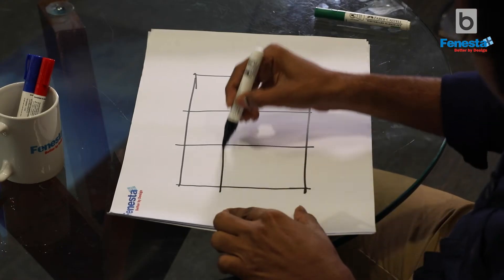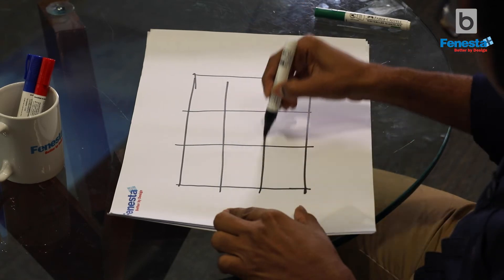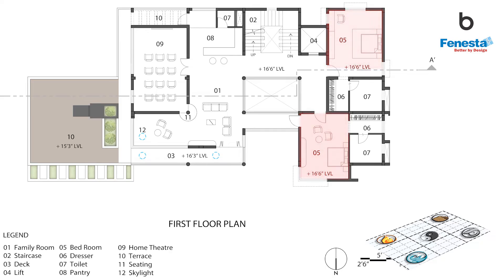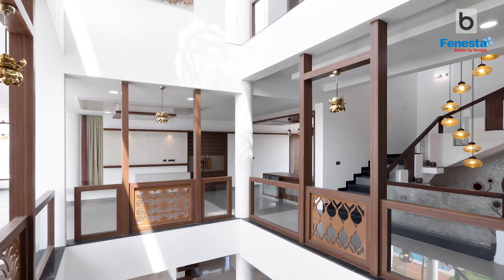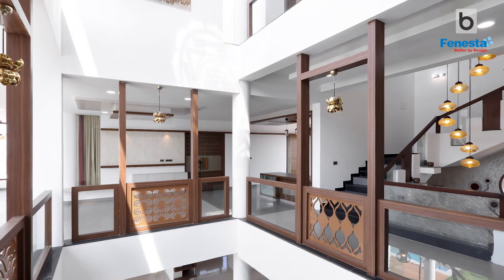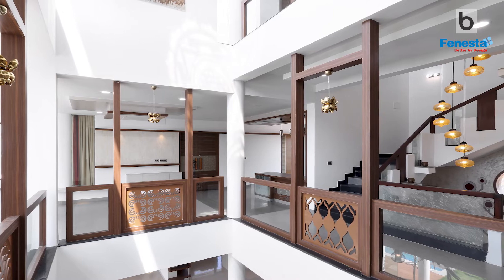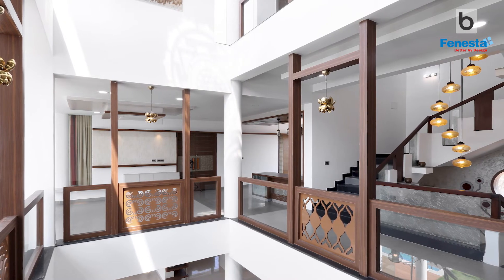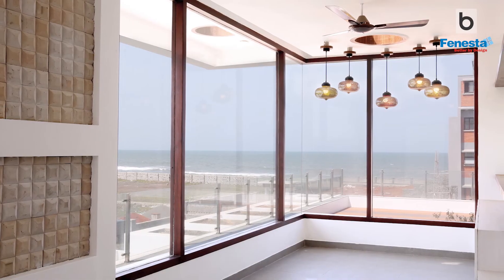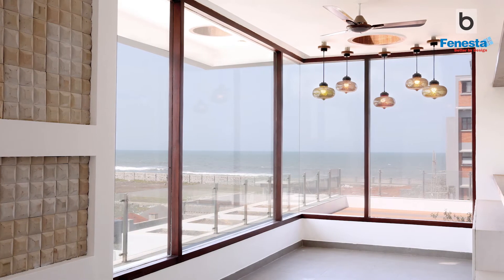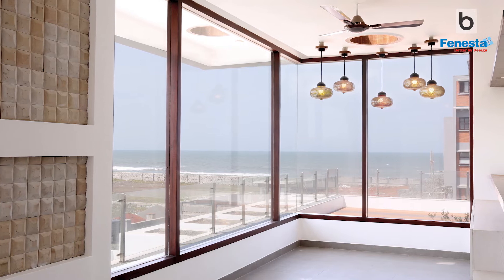On the first floor, another two bedrooms were placed the same as the ground floor. There is a home theatre on the southeast corner, above the kitchen. A larger L-shaped family room was planned to have a panoramic view to the sea, as well as the greenery designed on that side.